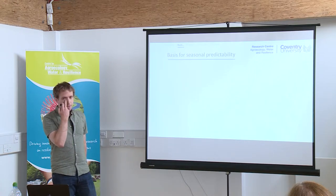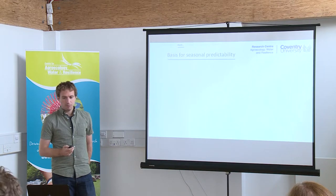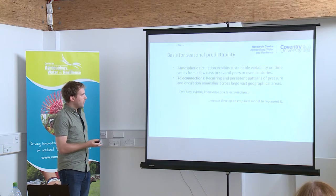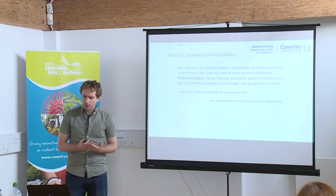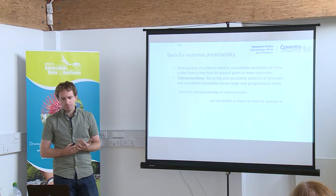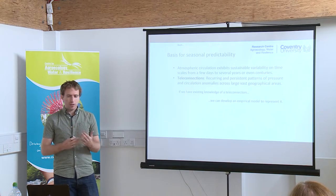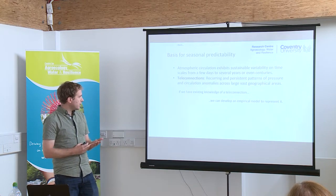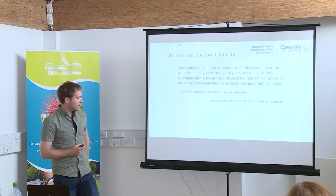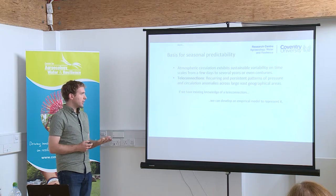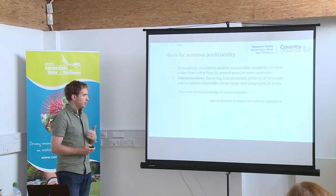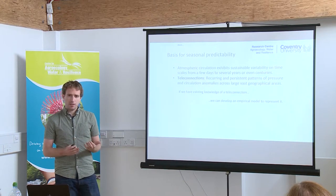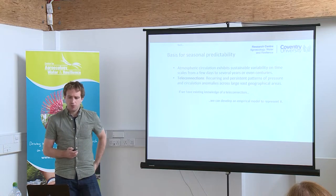I want to move on to thinking about the basis of seasonal predictability. Atmospheric circulation exhibits sustained variability on various timescales, and we refer to the recurring and persistent patterns of pressure and circulation anomalies within the climate system as teleconnections. If we have existing knowledge of a teleconnection, we can develop an empirical model to represent it. There are a number of different modes of variability in the climate system that offer potential for predictability.